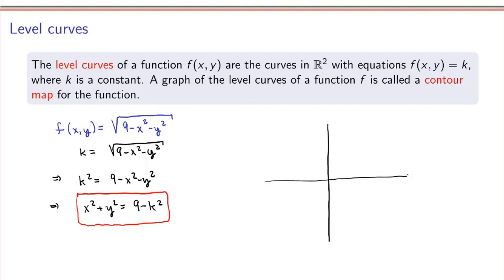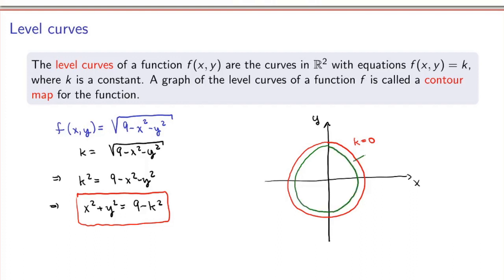Sketching a contour map for this function in the xy-plane gives a bunch of circles of different radii. For k equals 0, I get a circle of radius 3. For k equals 1, a circle with radius square root of 8. For k equals 2, a circle with radius square root of 5. For k equals 3, I get x squared plus y squared equals 0, which is just a single point at the origin. This is an example of a contour map, where several level curves for the function are sketched.